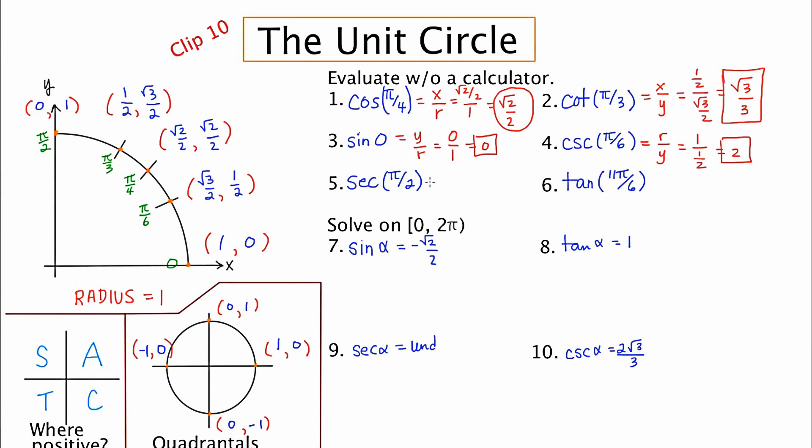Secant of pi over two. Well, the secant of anything is going to be R over X. R is always one. It's a no brainer. So I go to pi over two, which is right here or 90 degrees. And the X is zero. And one over zero is undefined. So I'm just going to abbreviate that UND, undefined.